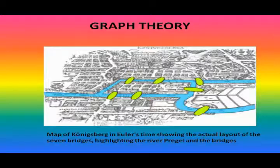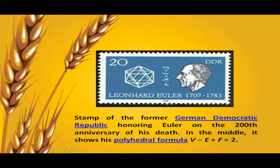Seven Bridges of Königsberg: In 1736, Euler solved the problem known as the Seven Bridges of Königsberg. The city of Königsberg in Prussia sat on the Pregel river and included two large islands connected to each other and the mainland by bridges. The problem was to decide whether it is possible to follow a path that crosses each bridge exactly once and return to the starting point. It is not — there is no Eulerian circuit. This solution is considered to be the first theorem of graph theory, especially of planar graph theory.